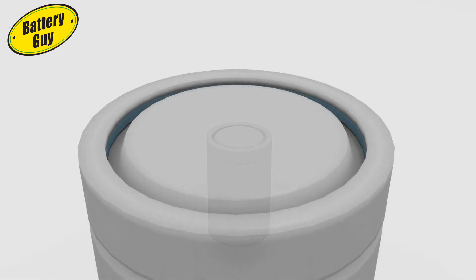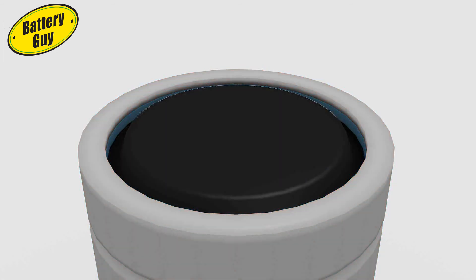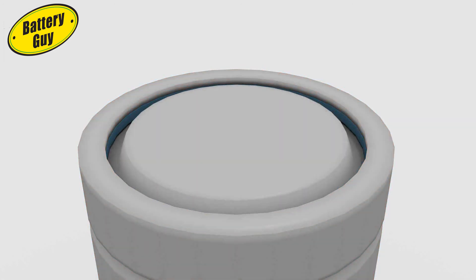As you can see, the positive case and the negative terminal are close together. They could easily be accidentally shorted by a coin in someone's pocket or if the packaging is broken and they came into contact with a metal shipping container.